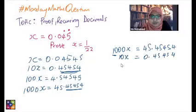We end up with 1000 minus 10 is 990x, and 45 minus this 0.45454 is 45.